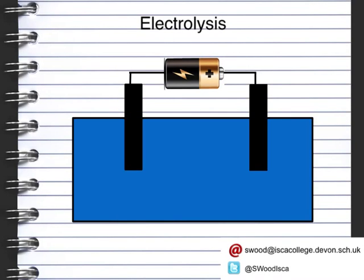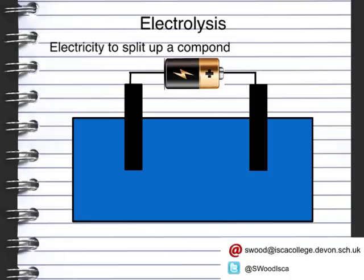Electrolysis is something that we have looked at before. Now, what we're going to look at is just the general terms that we use when we're talking about electrolysis. Basically, electrolysis uses electricity to split up a compound. It needs a couple of conditions to be able to actually happen. The first one is it needs to be either a solution or it needs to be molten, which means a liquid. As soon as you make a solution or a liquid, you are able to form ions. Now, ions are charged particles.